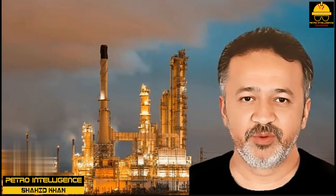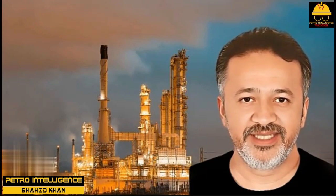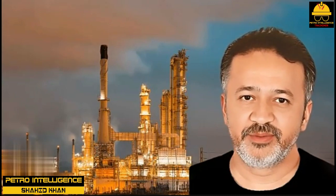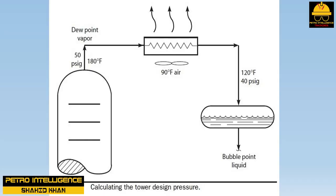Selecting an Optimum Tower Pressure. The process design engineer selects the tower design operating pressure as follows. First, determines the maximum cooling water or ambient air temperature that is typically expected on a hot summer day in the locale where the plant is to be built. Second, calculates the condenser outlet or reflux drum temperature that would result from the above water or air temperature. Third, the designer calculates the pressure in the reflux drum, assuming that the condensed liquid is at its bubble point. Adding 5 or 10 PSIG to this pressure for pressure loss in the overhead condenser and associated piping, the designer then determines the tower top pressure.